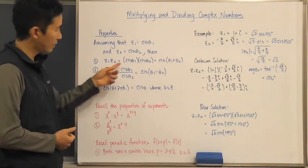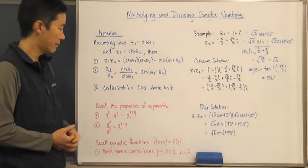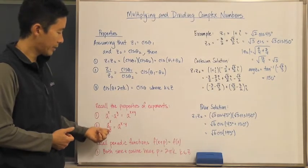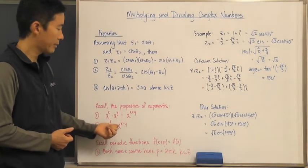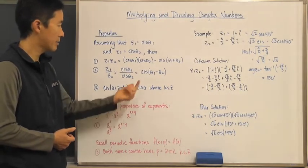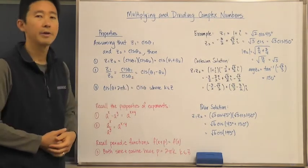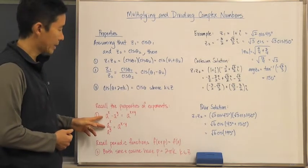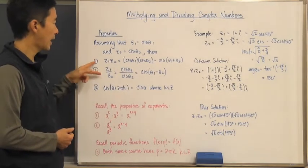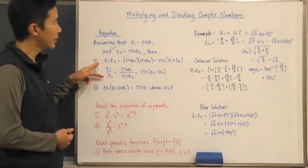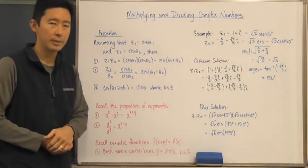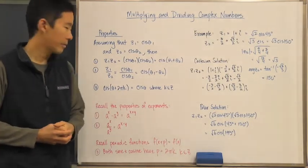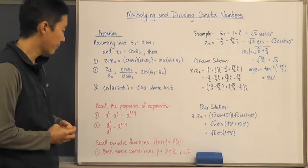And if we take a to the x divided by a to the y, that's going to be a to the x minus y, which is also very similar. So the laws of exponents and the properties for multiplying and dividing complex numbers look very similar — that's one way we can go about remembering that.